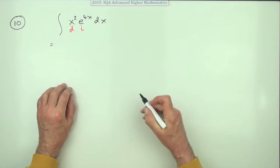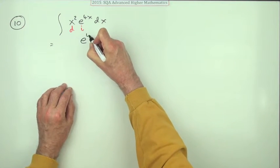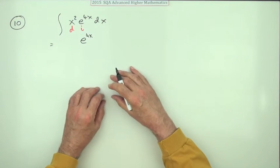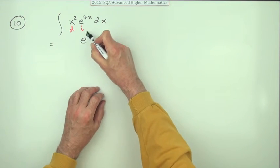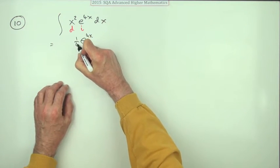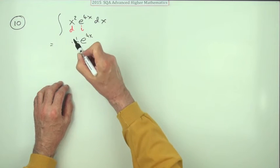So it's an integration, integrate first, so e to the 4x simply goes back to e to the 4x but divide by the inner derivative 4x so it'll be a quarter of it. This one waits.